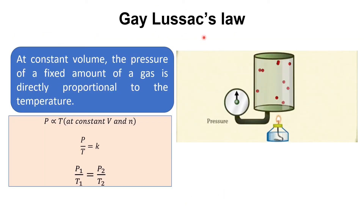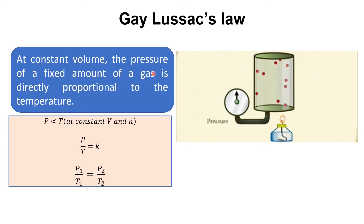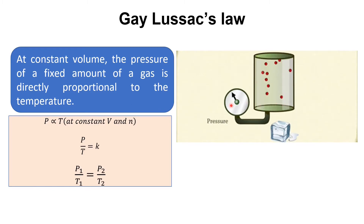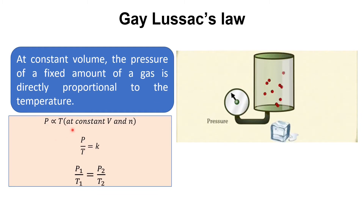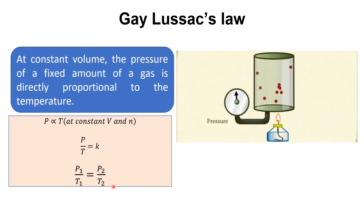The third law is Gay-Lussac's Law. According to this law, at constant volume, the pressure of a fixed amount of gas is directly proportional to the temperature. Here the volume and the amount of gas are kept constant — only the pressure and temperature are varying. When heated with a burner replacing an ice cube, the pressure increased. So pressure is directly proportional to temperature, P over T is constant, and P1 over T1 equals P2 over T2.